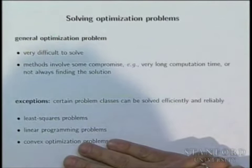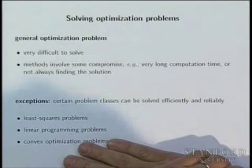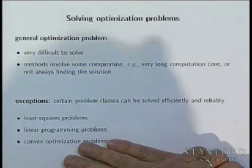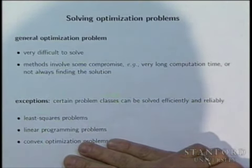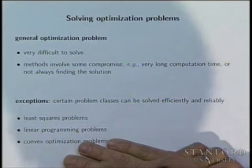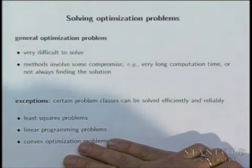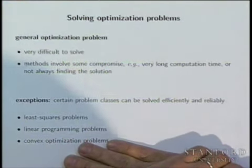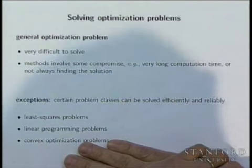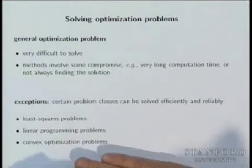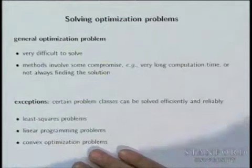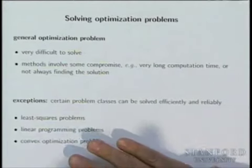And basically, in general, I think it's fair to say it just can't be done. I can write down shockingly simple optimization problems and you can't solve them — and it's very likely no one else can. So if you have a background in algorithm complexity, I can write down very innocent-looking optimization problems and they'll be NP-hard.